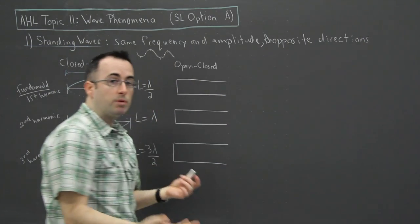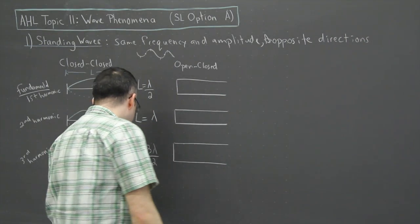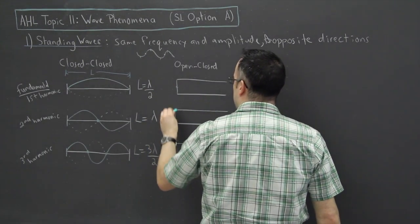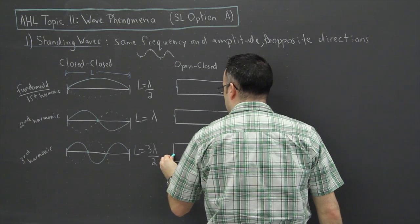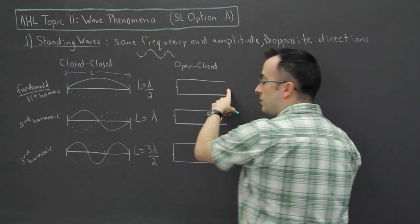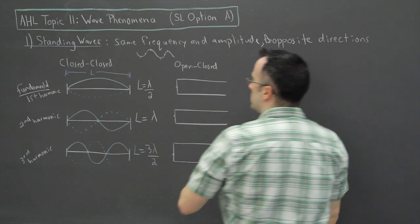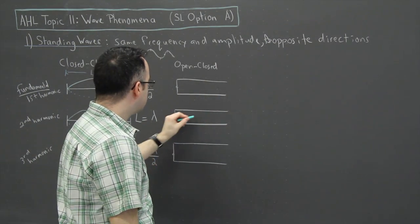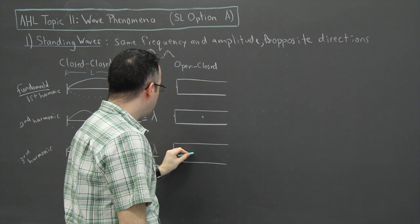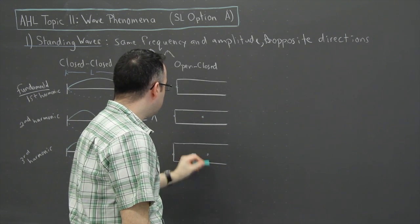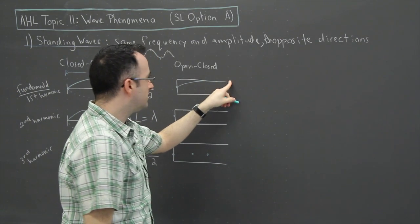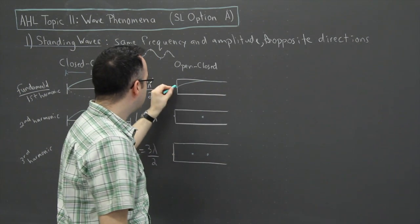So in this case right here, what we would end up having is something like this. This time, we have a node here, a node here, and a node here, but we can't have a node at this end because it's open. So what we do is we consider no nodes in the middle. We consider one node in the middle, and we have two nodes in the middle. And there's a rule here with these things, and it says that it has to be sort of up at the end.